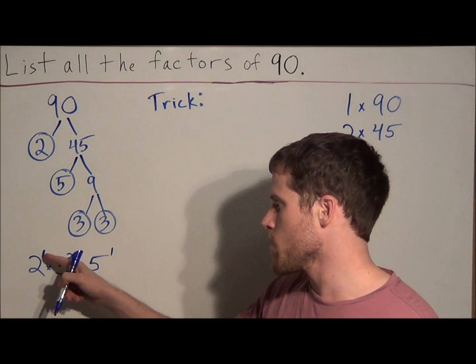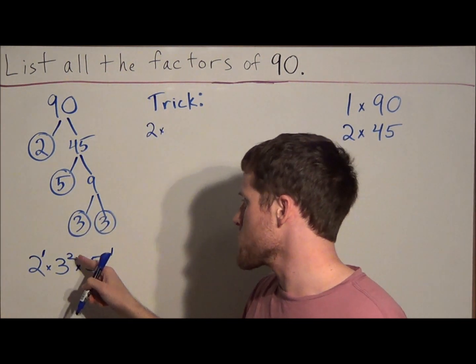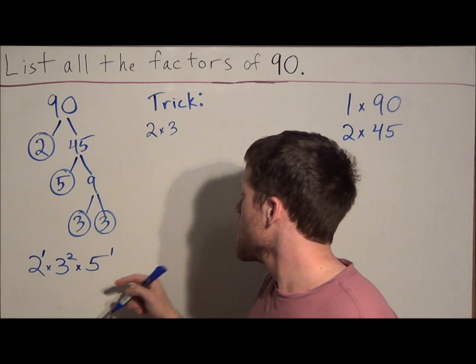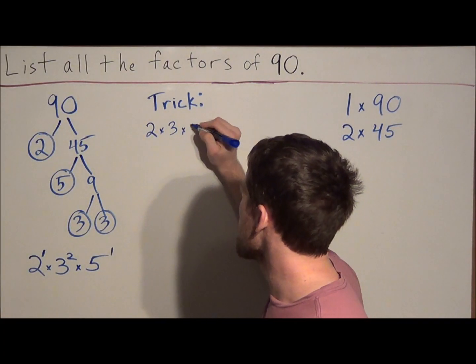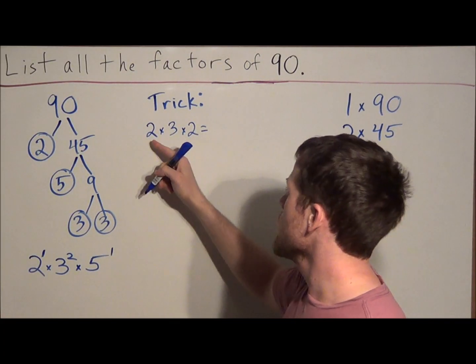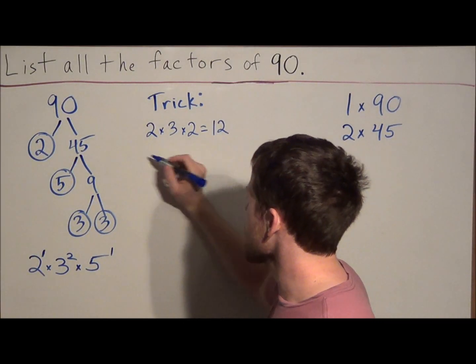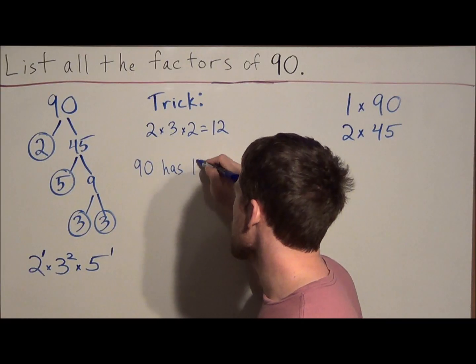So if we start with the first exponent, 1, 1 plus 1 is 2. Then we go to this exponent, 2, 2 plus 1 is 3. And then this exponent, 1, 1 plus 1 is 2. And we're going to multiply these numbers together. So we have 2 times 3 is 6, times 2 is 12. And this tells us that 90 has 12 factors.